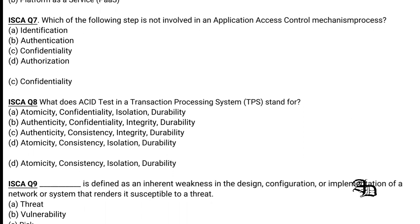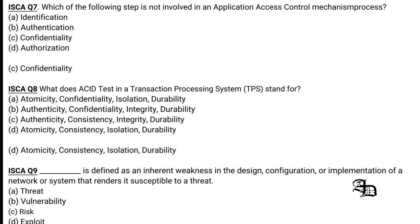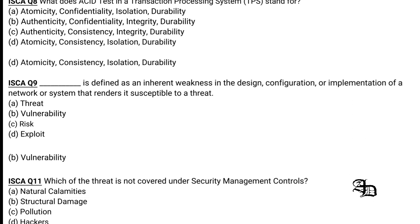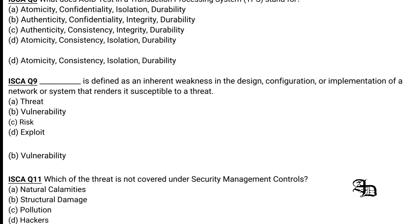Question 4: A blank is defined as an inherent weakness in the design, configuration, or implementation of a network or system that renders it susceptible to threats. A weakness in a system that can be exploited is termed a vulnerability, so option B is the correct answer. Threat, risk, and exploit are not correct.